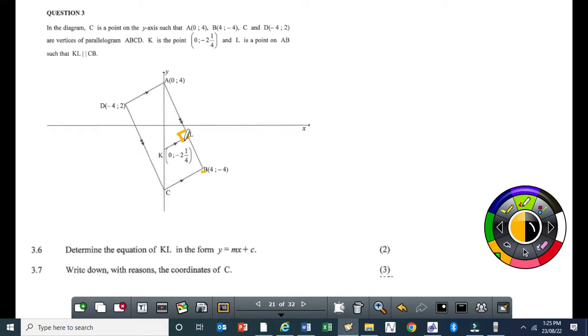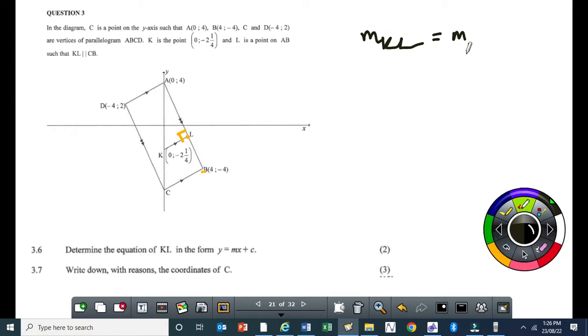Because KL is parallel to CB, which means it's also parallel to AD, and it's perpendicular to AB. Because AD is perpendicular to AB. To do that question, to find the equation of KL, you need to know the gradient of that line. What would be the gradient? The gradient M KL is equal to M AD. Why are their gradients equal? Because they are parallel. KL is parallel to AD. So, what's the gradient of AD? It's a half. So, this is easy. That's why it's two marks.